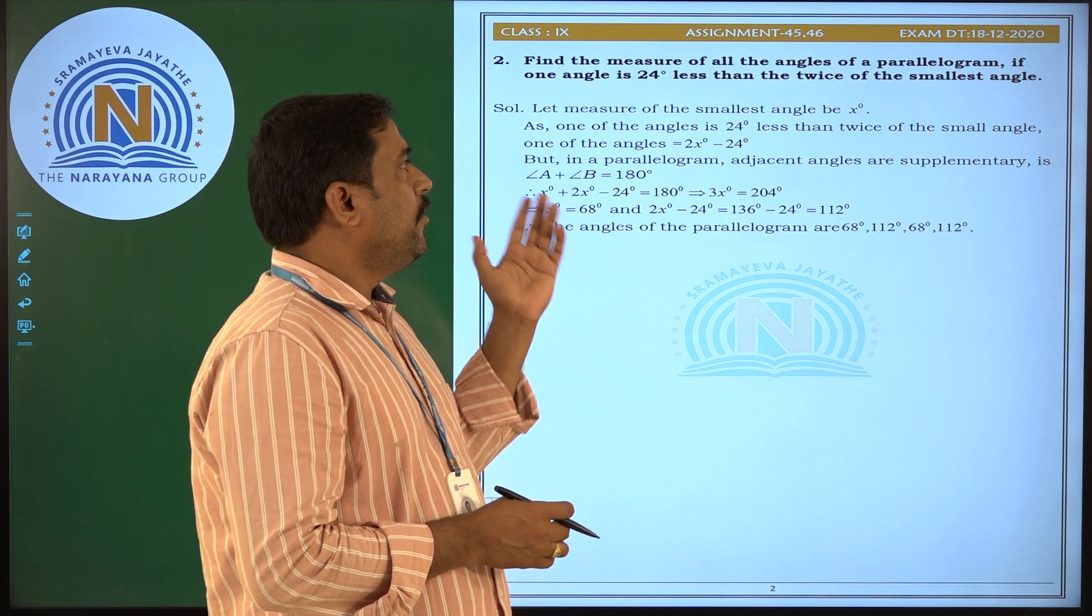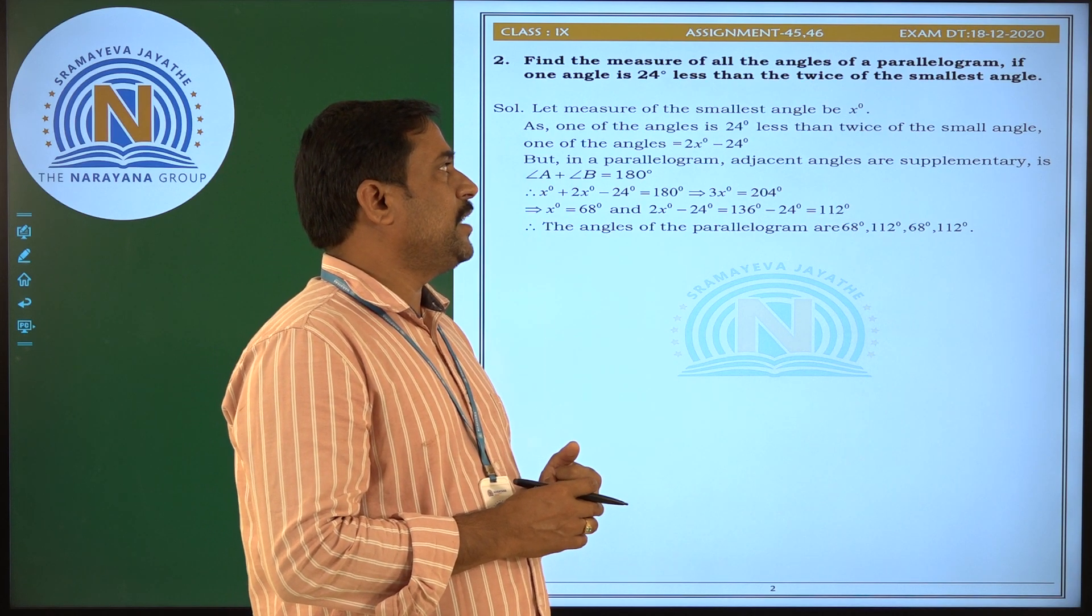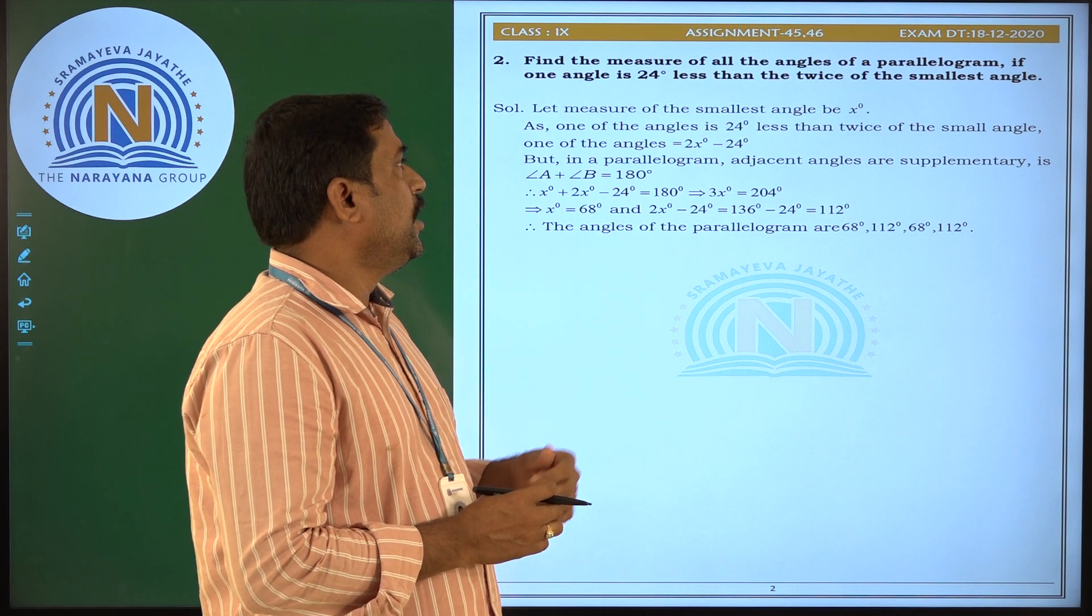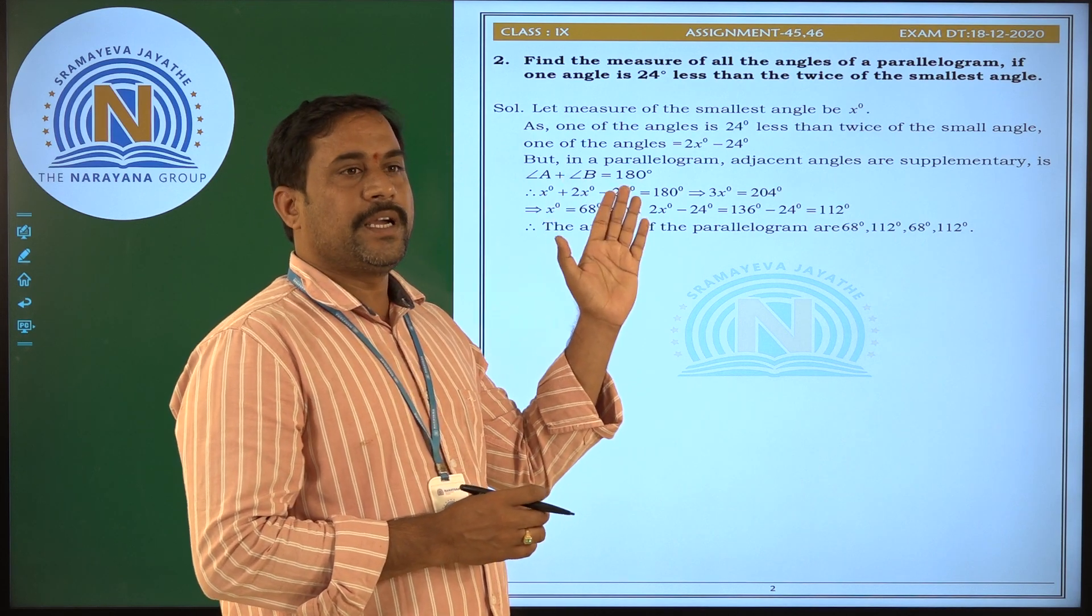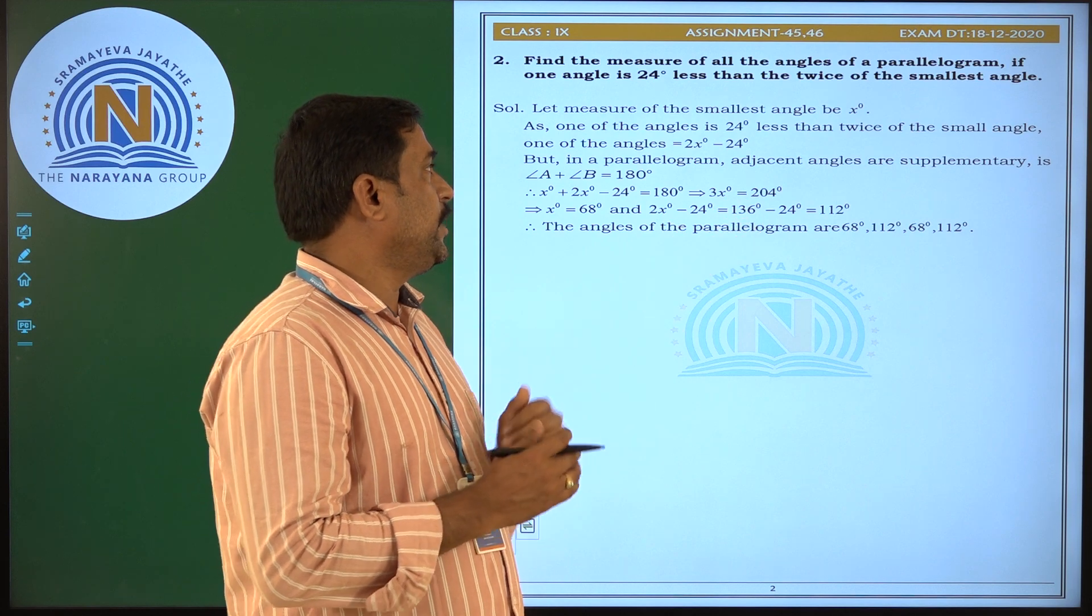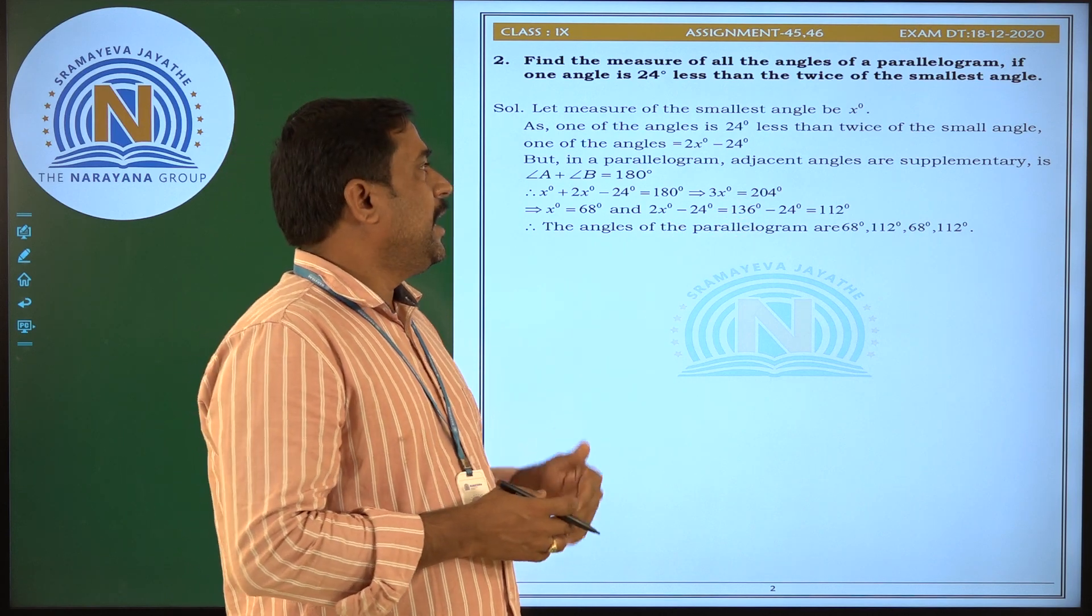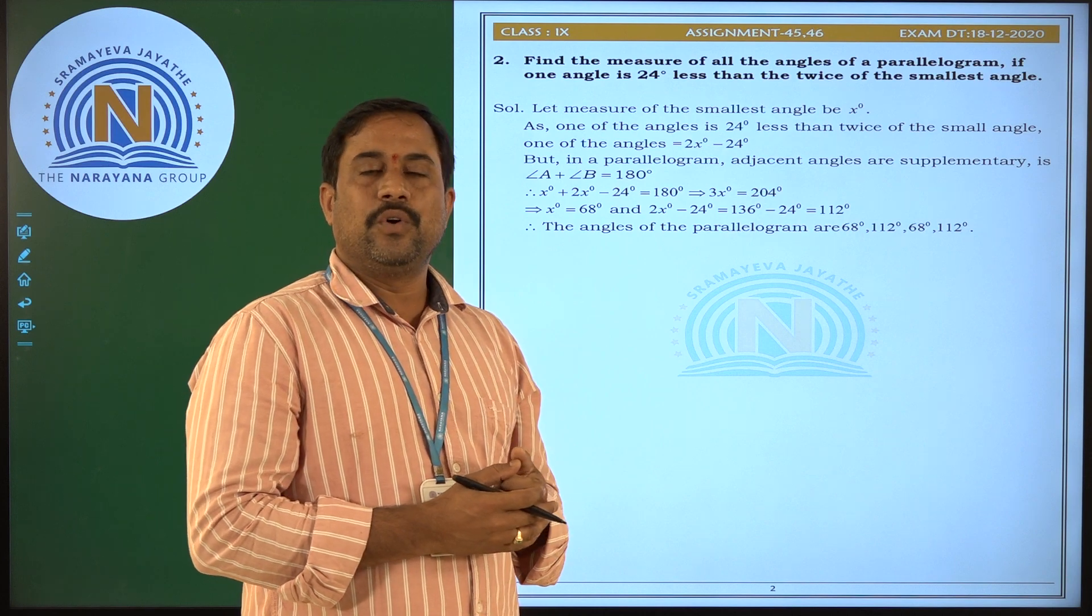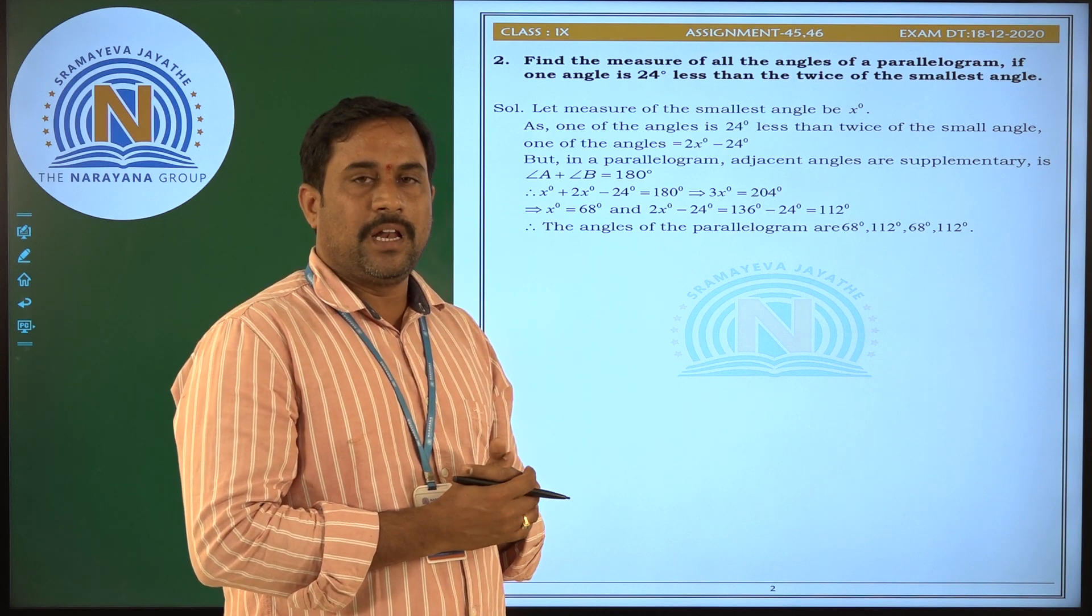What is the condition given? One of the angles is 24 less than twice the smallest angle. So one angle equals 2x minus 24 degrees. But we know that the sum of the adjacent angles are supplementary in a parallelogram.